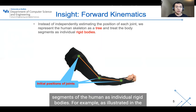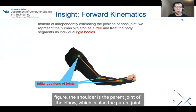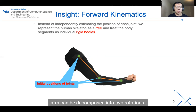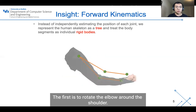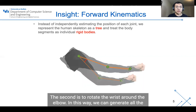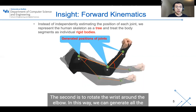For example, as illustrated in the image, the shoulder is the parent joint of the elbow, which is also the parent joint of the wrist. Assuming these are the initial positions of the joints, the movement of the arm can be decomposed into two rotations: the first is to rotate the elbow around the shoulder, and the second is to rotate the wrist around the elbow.